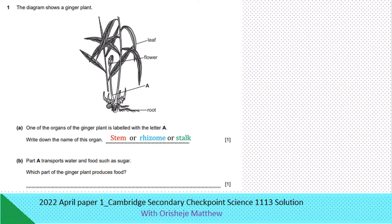Part B: which part of the ginger plant transports water and food such as sugar, and which part produces its food? The answer is the leaf, the foliage, the stem, or the chloroplast. Any of these answers is correct.